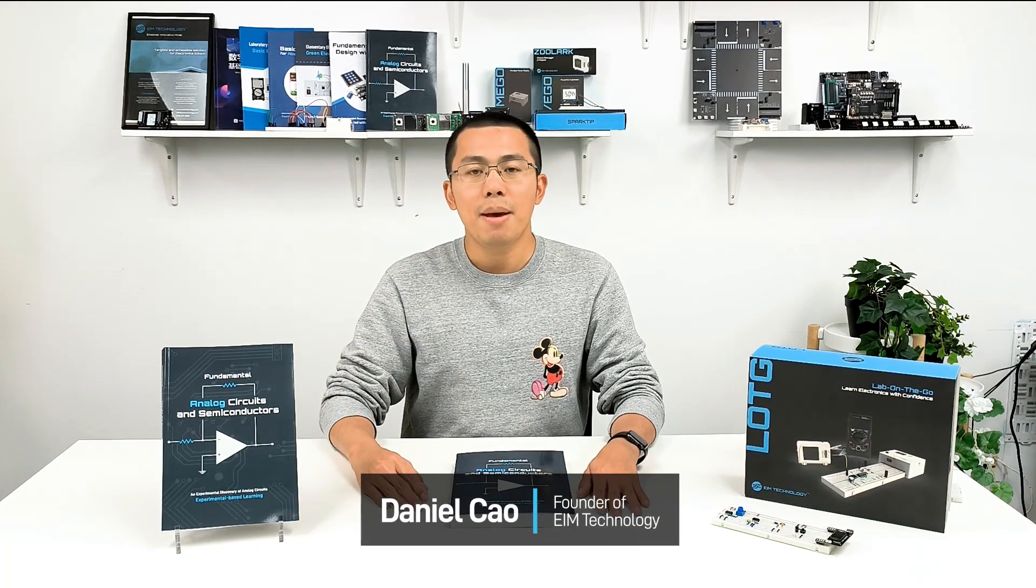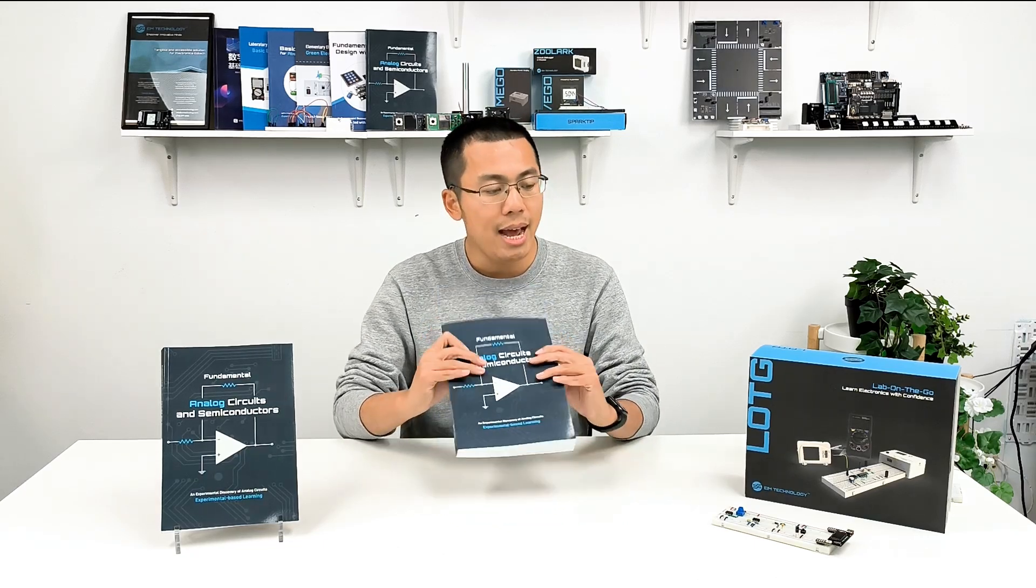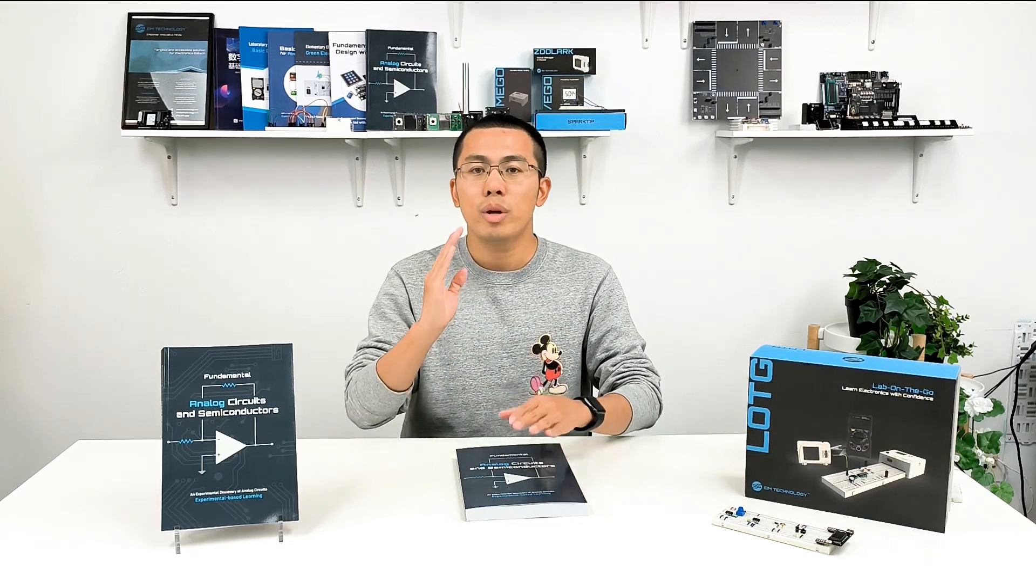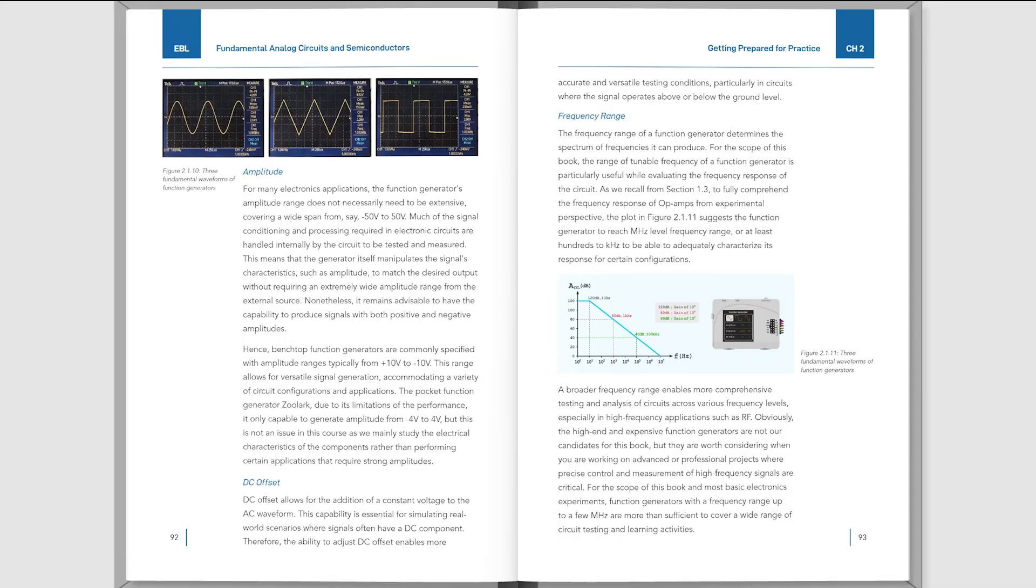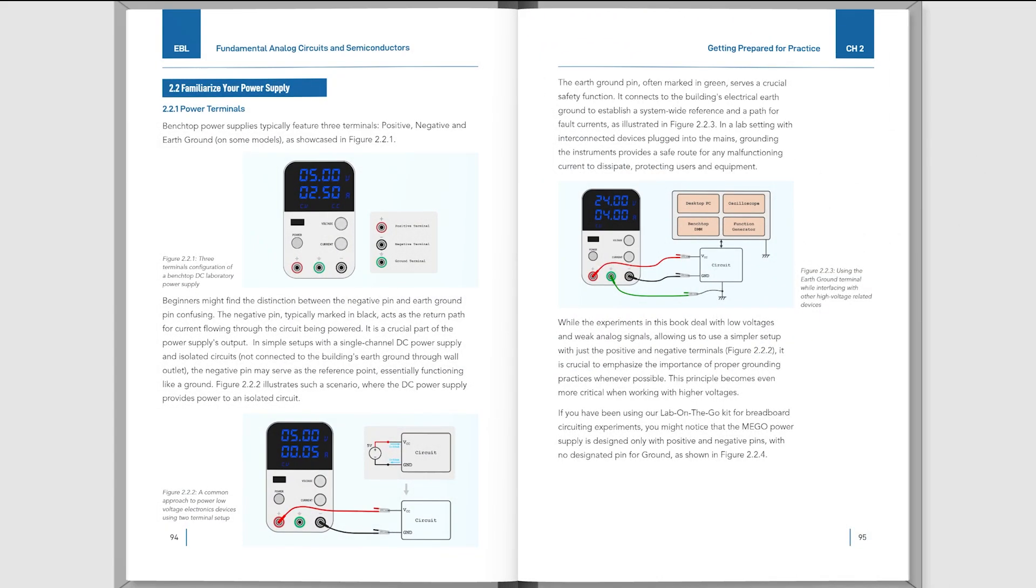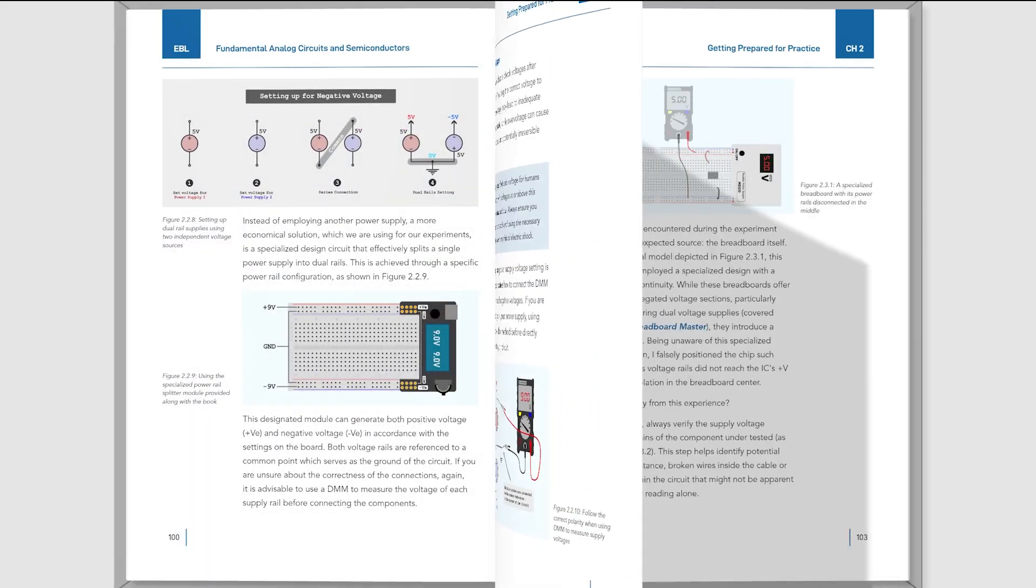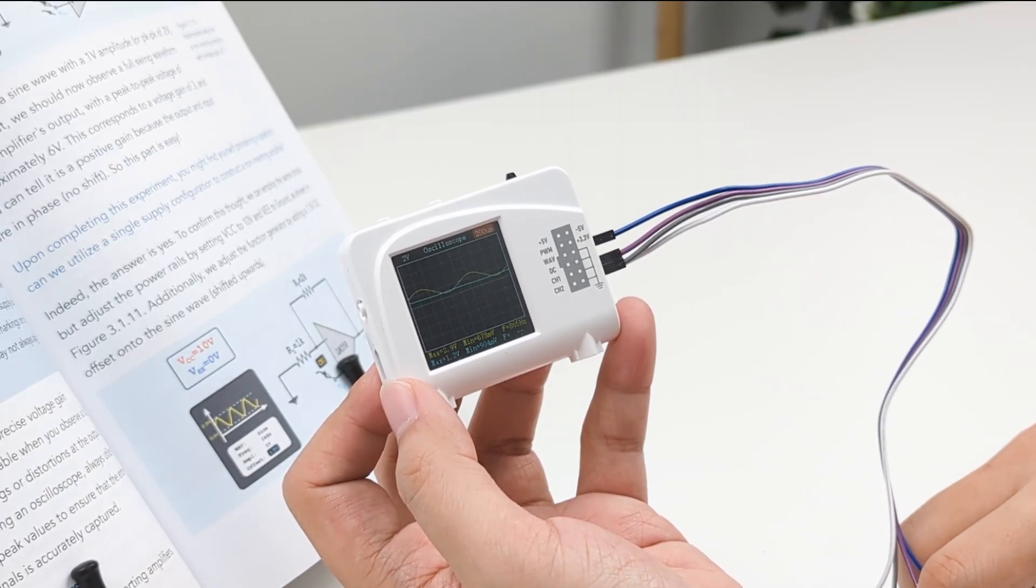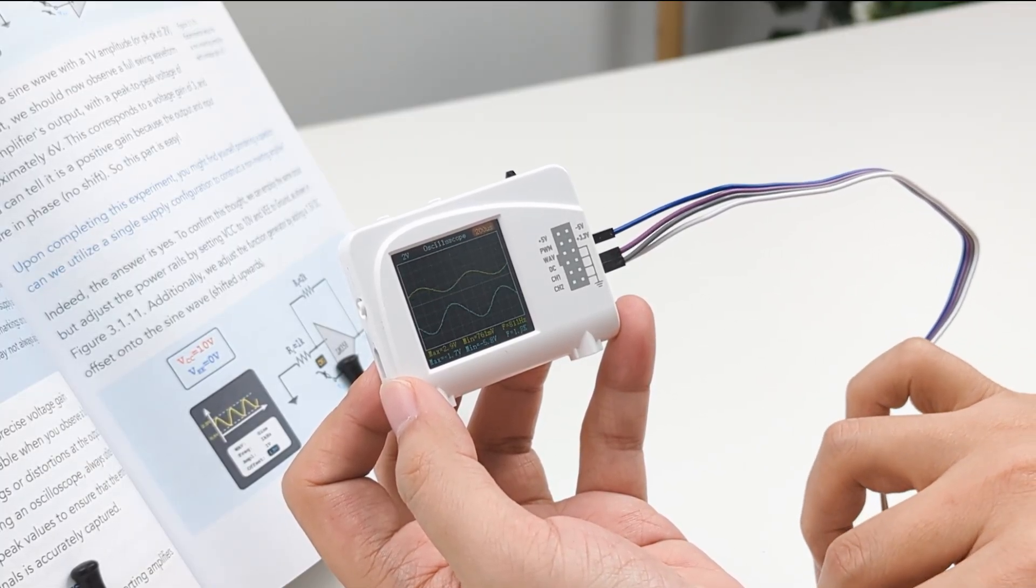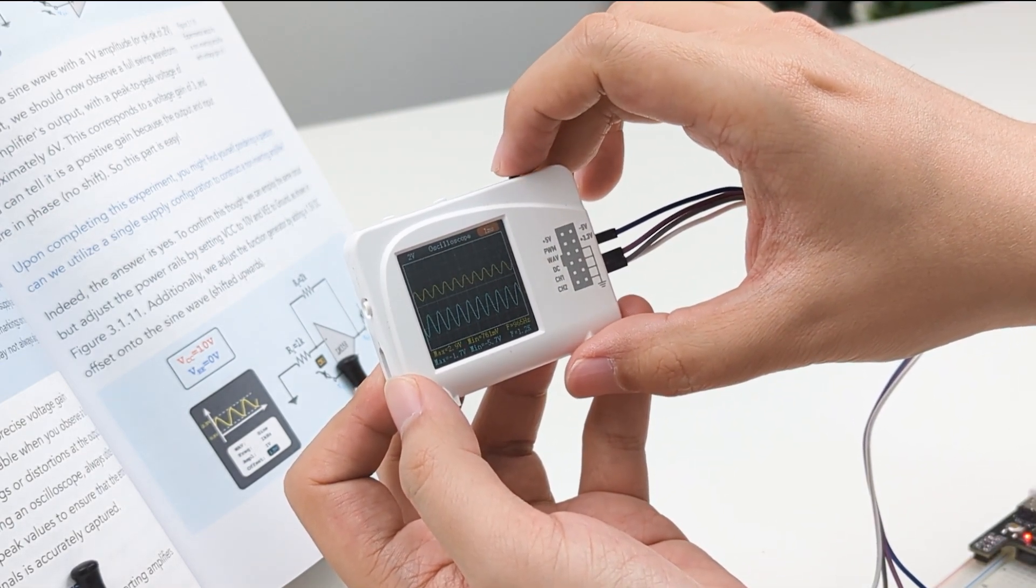Hello, I'm Daniel, founder of EM Technology. After extensive development, we've created this book and kit to reshape your learning experience. In this book, all 300 pages and 322 illustrative figures were thoughtfully created to improve your reading experience. And the kit is compatible with all labs and exercises in the book, allowing immediate hands-on practice to solidify your understanding.